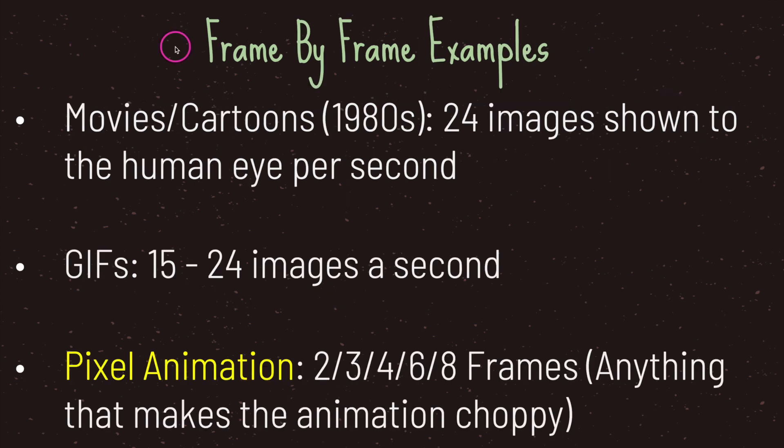Let's take a look at a few examples of frame by frame animation. We have movies and cartoons, especially cartoons in the 1980s. Typically in movies and cartoons, you are shown 24 images per second, and because you are shown 24 photographs per second, this creates the illusion of movement.